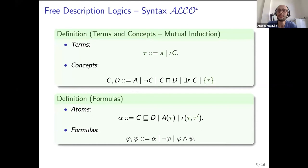More formally we have introduced a language that we call ALCO iota, defined in terms starting from a set of terms tau that are either individual names A or definite descriptions iota C where C is a concept. Concepts are defined by mutual induction starting from concept names using the usual connectives and a constructor for nominals that allows for arbitrary terms inside.